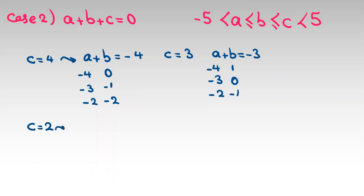Let's consider c equals 2, so a plus b equals negative 2. With a equals negative 4, b equals 2; with a equals negative 3, b equals 1; with a equals negative 2, b equals 0; and with a equals negative 1, b equals negative 1. So we have four answers here.